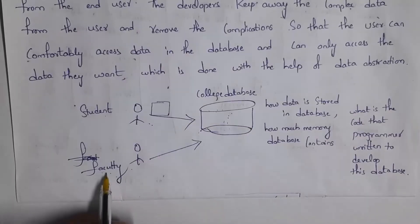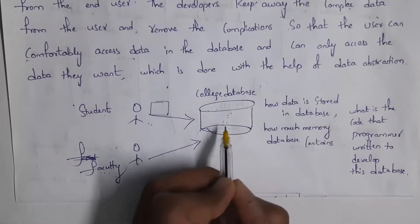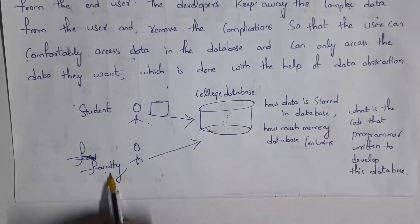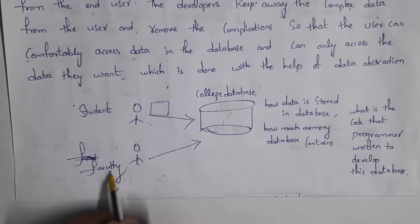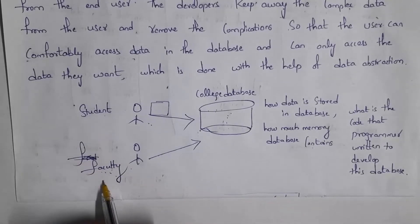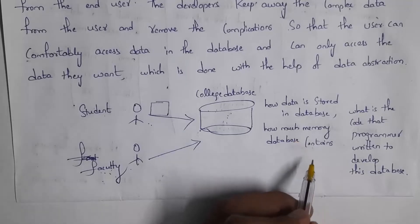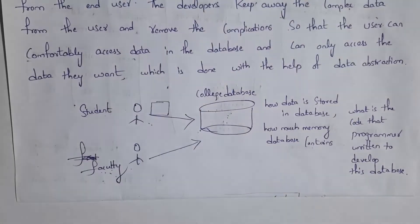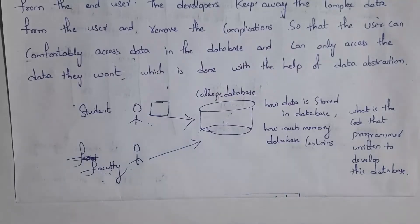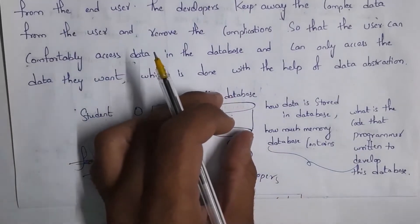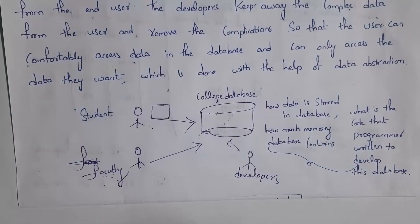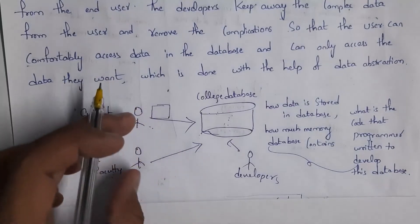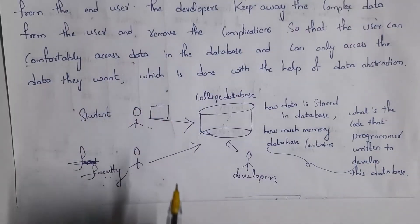Similarly, whenever faculty opens this college database, it will display only faculty information — like faculty attendance, faculty salary, and so on — but it will not display student information to the faculty, nor how data is stored in the database, how much memory it contains, or what code the programs are written in. Just it will display only faculty information. So developers who develop the database keep complex data away from the user, so users can comfortably access only the data they want, achieved by using data abstraction.